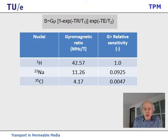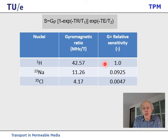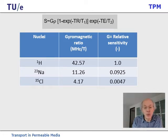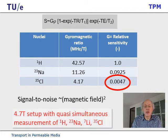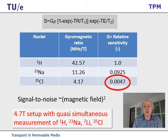One issue is sensitivity. The sensitivity of hydrogen is by definition 1, but if we go over to chloride, the sensitivity is quite low, making it quite difficult for NMR to measure chloride. However, there is one trick: the signal-to-noise ratio in NMR is proportional to the magnetic field squared. In other words, you should go to very high fields. With a high field, you can build a setup that measures hydrogen, sodium, lithium, and chloride almost simultaneously.